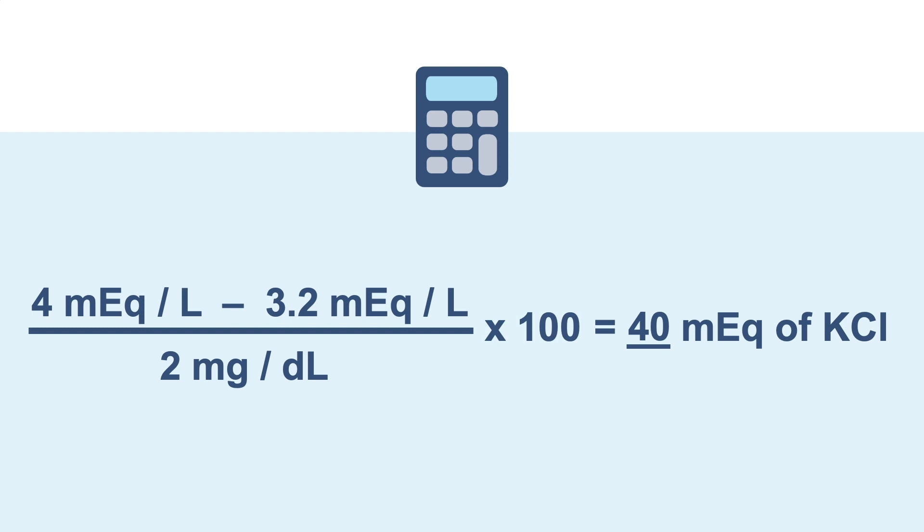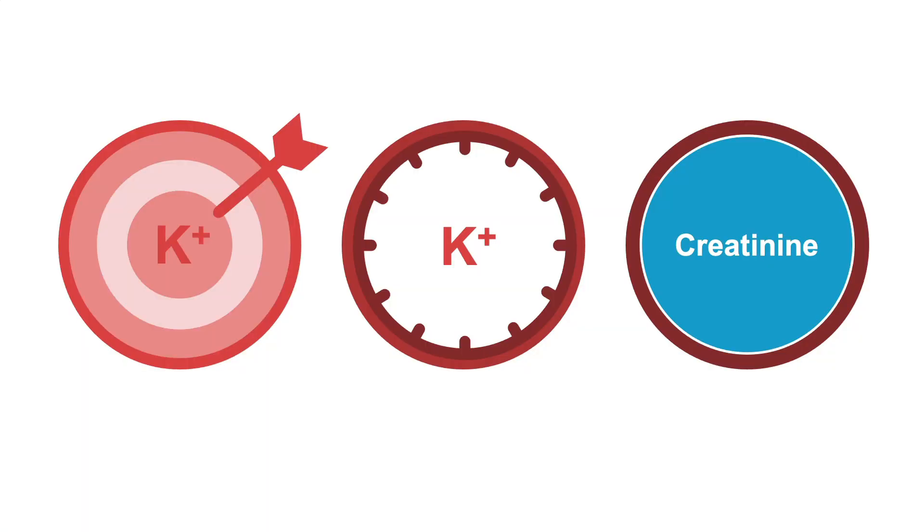Now let's talk logistics. Potassium chloride comes in multiples of 10 or 20 milliequivalent doses. So you have to round to the nearest 10 or 20 milliequivalents, depending on what's available at your hospital's pharmacy. Of course, the numbers don't always work out this neatly.